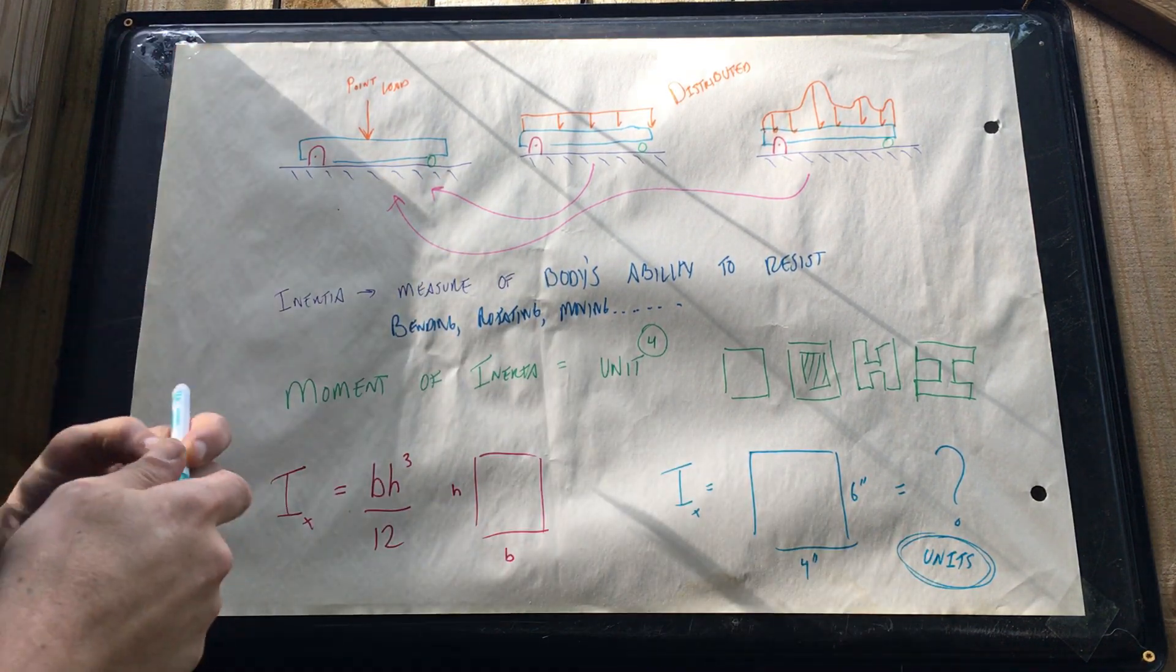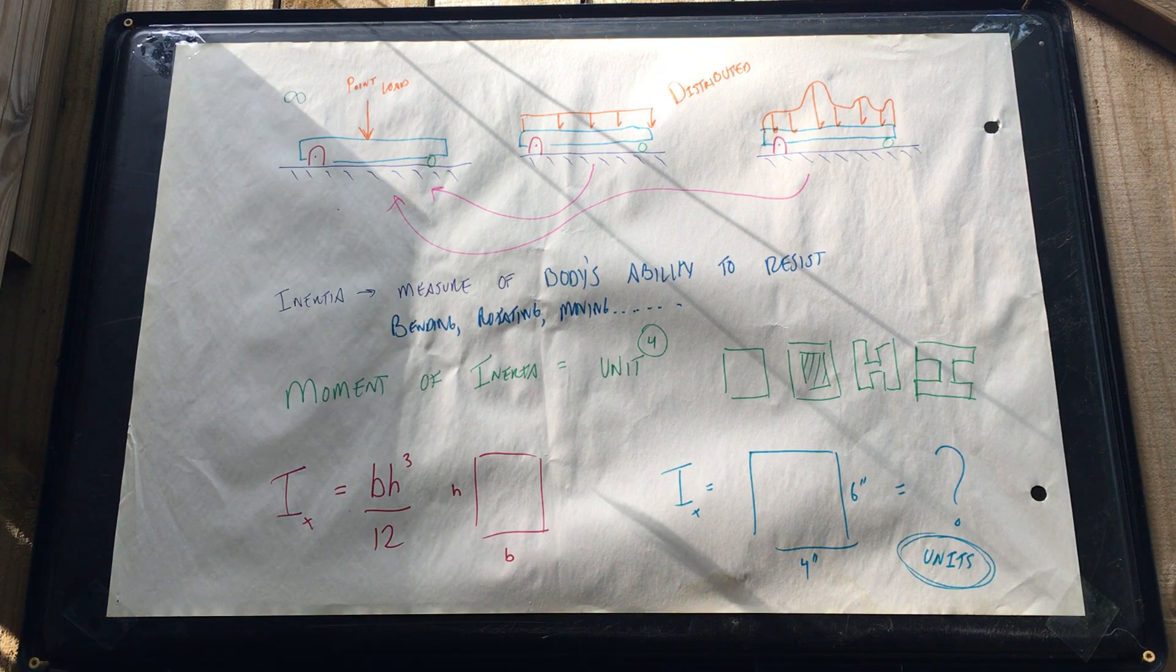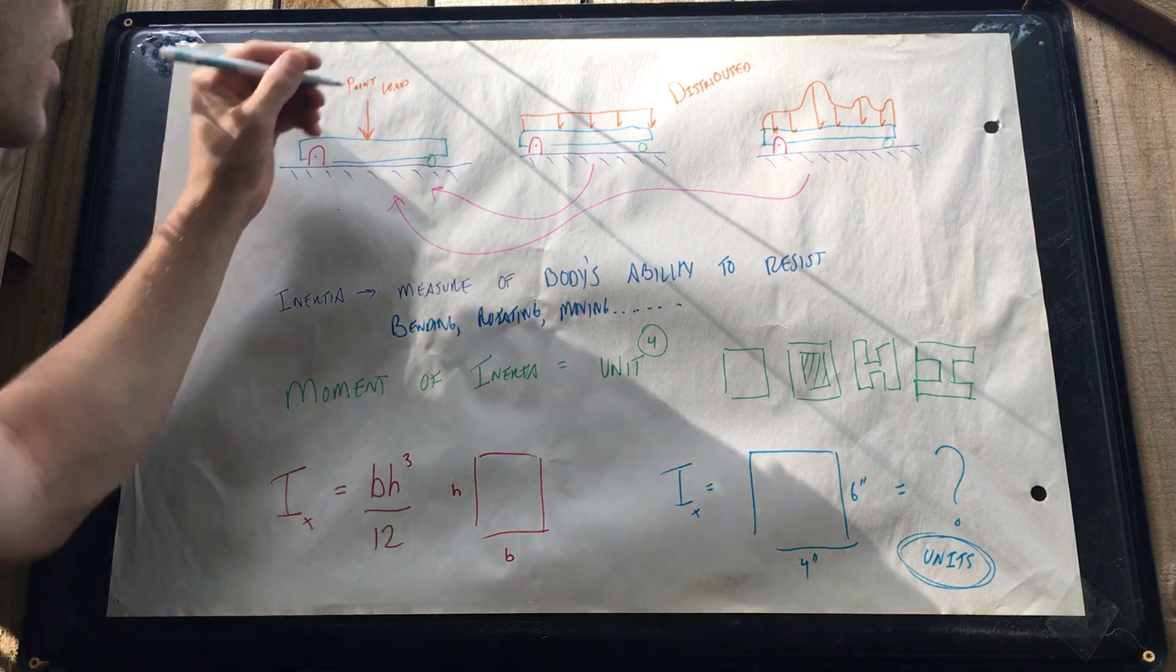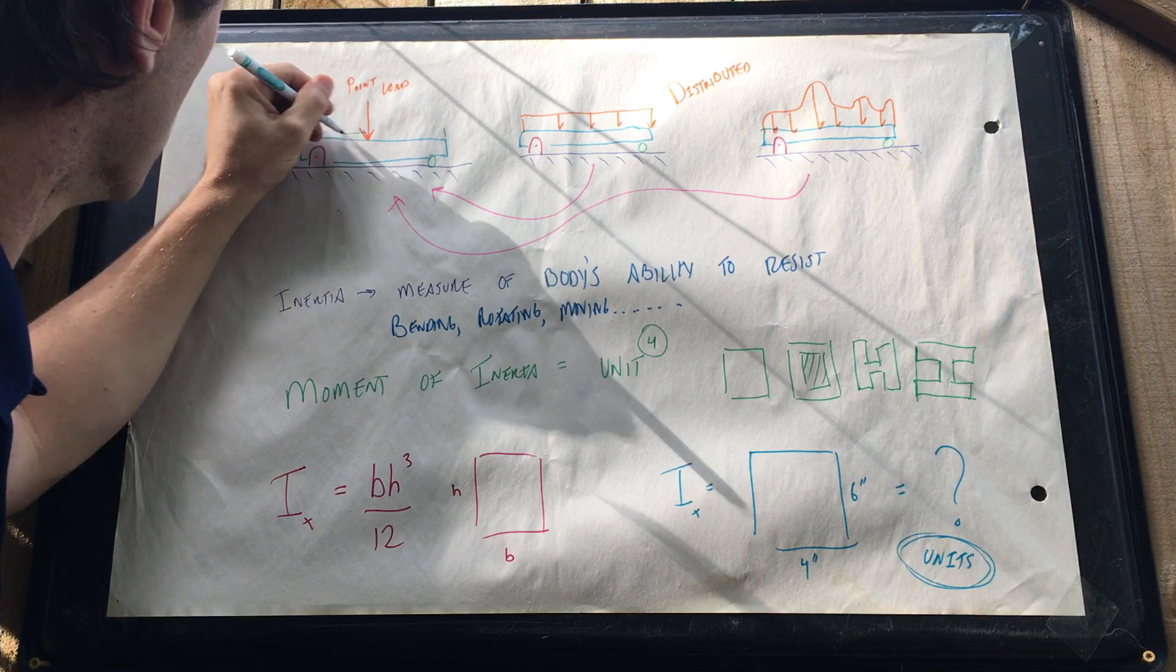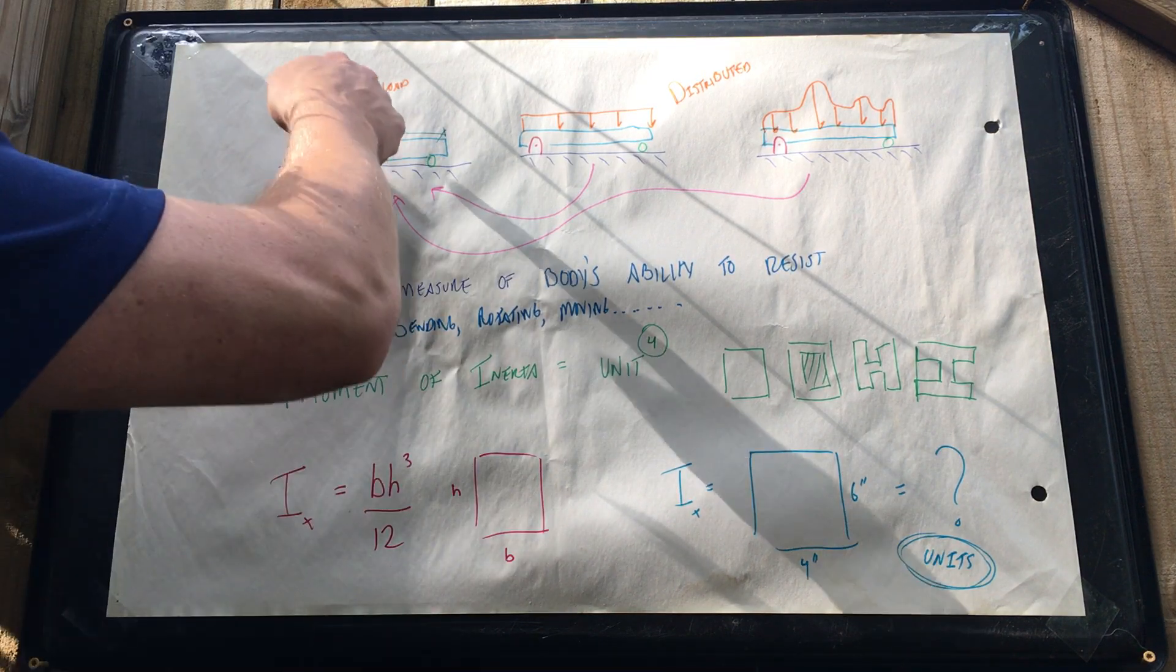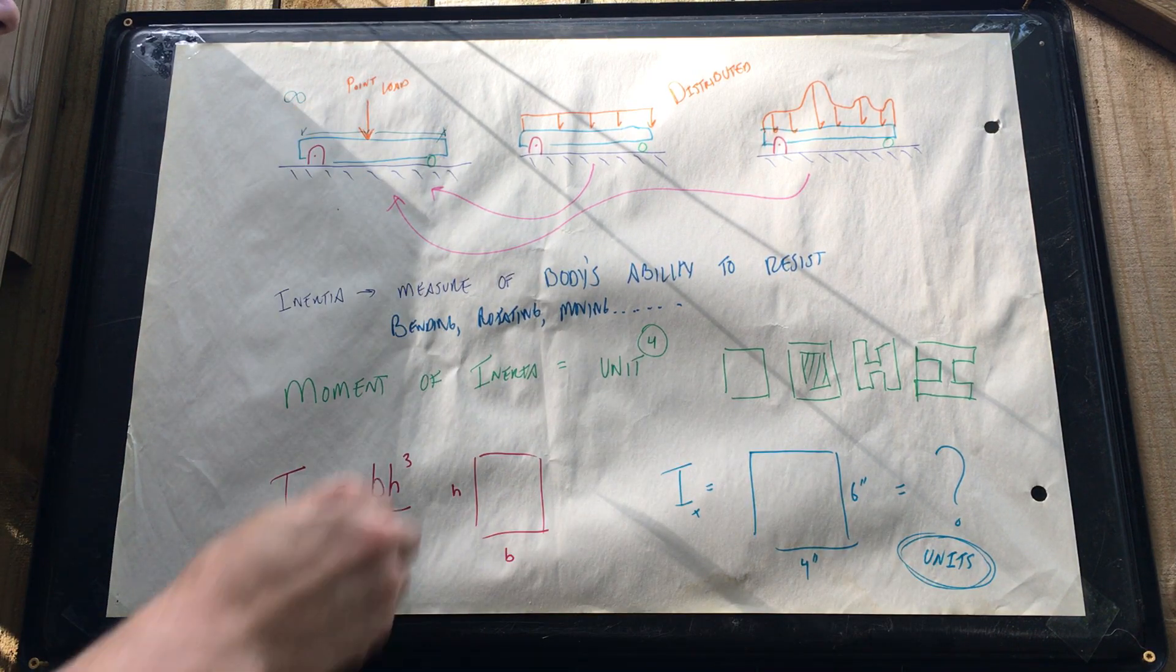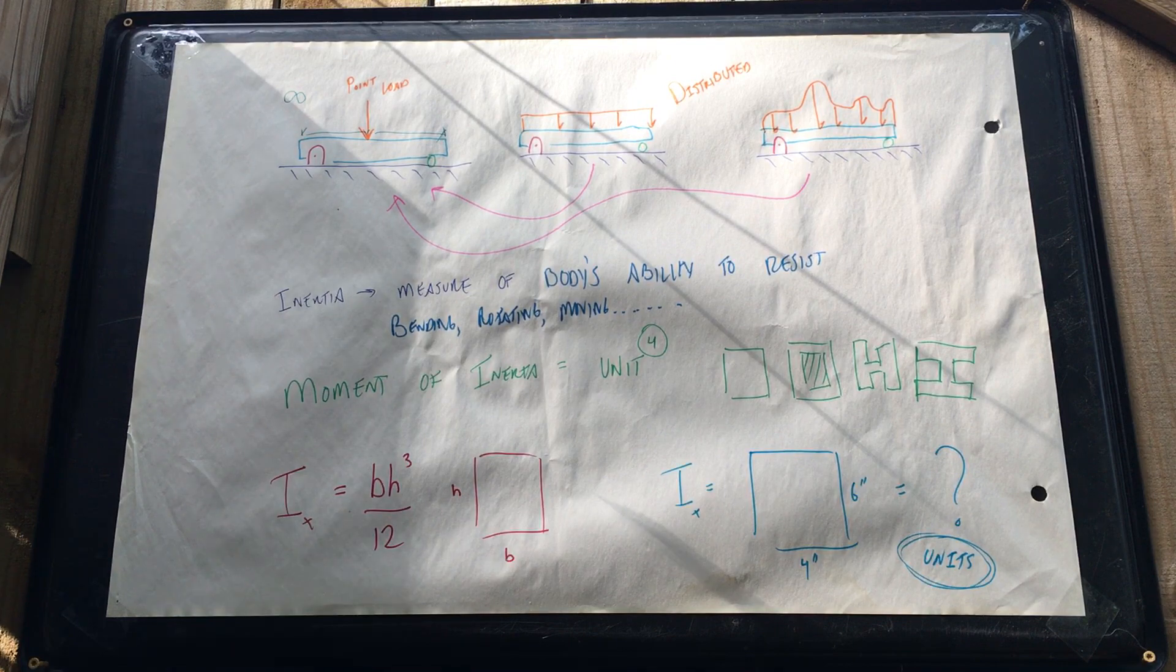So what we use is something referred to as a point load, which is infinitely small. You actually now can then dimension that because it is infinitely small. So a point load is what we're going to use for this class, but that's the thing that we're going to bring it back to.